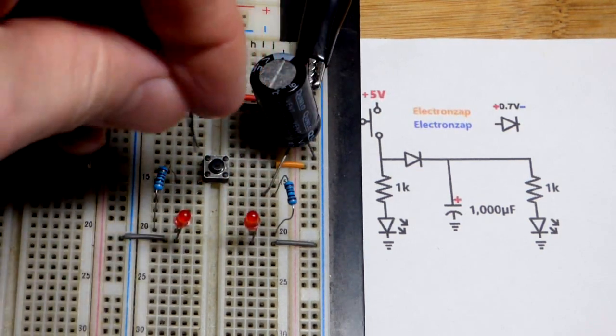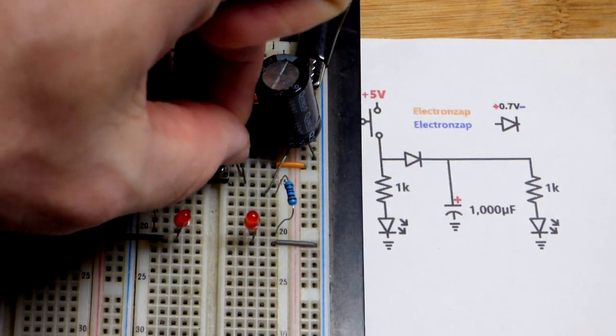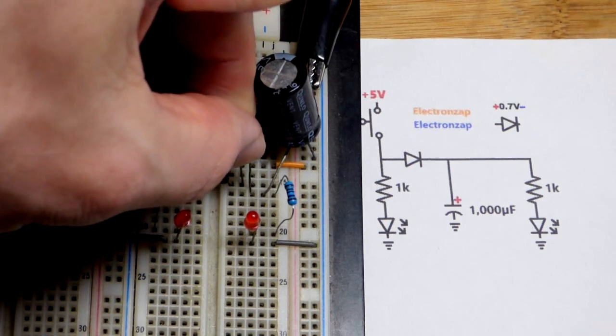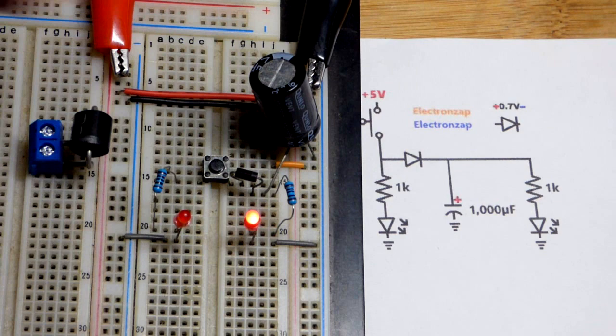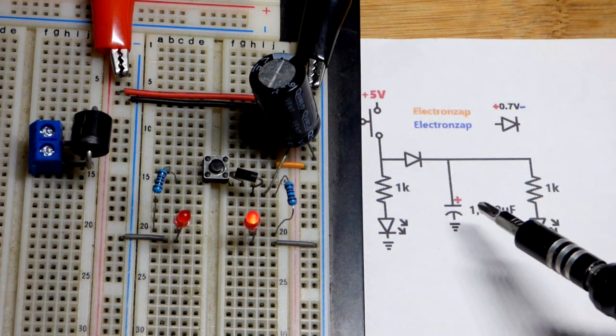Lets current flow one way but not the other, but knowing that doesn't really tell you a lot of how you can use it. And so I thought I'd try to make probably a number of demonstration circuits over time. So it's letting current go through because of the direction that we have it put in.